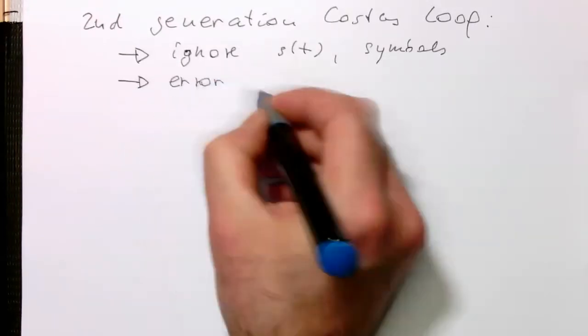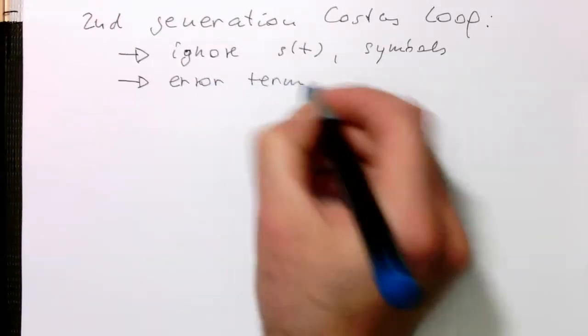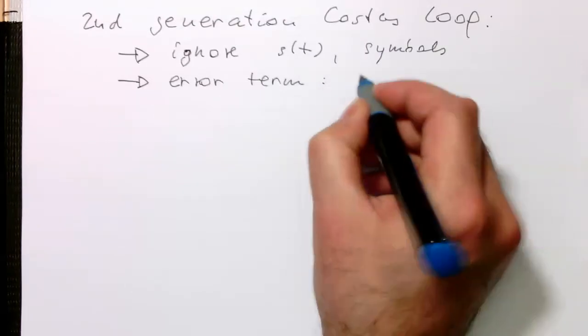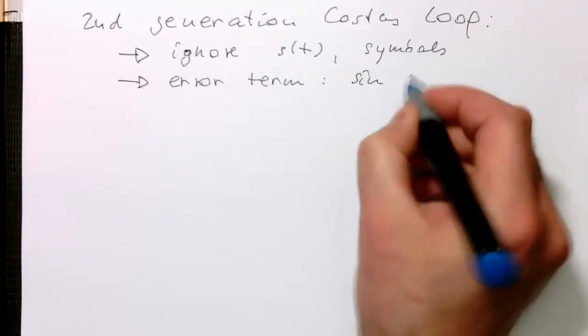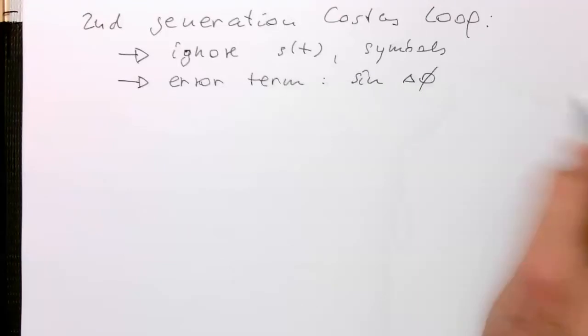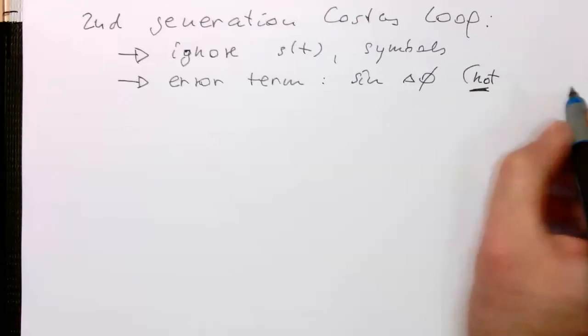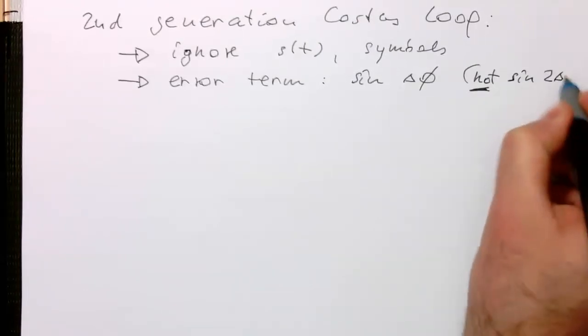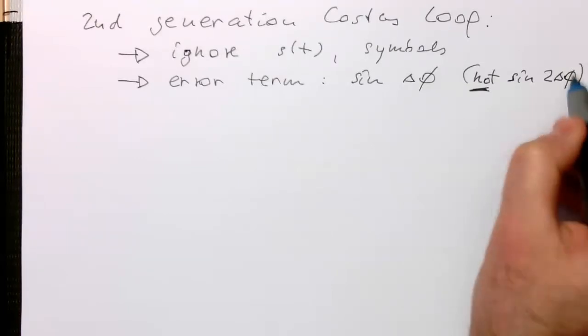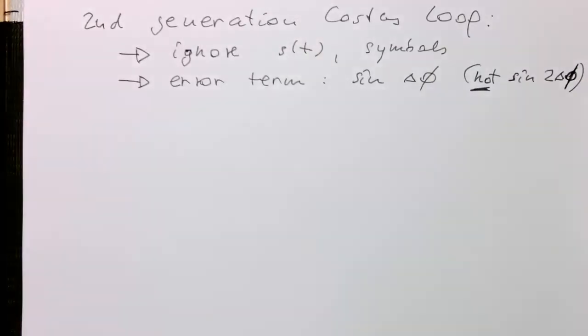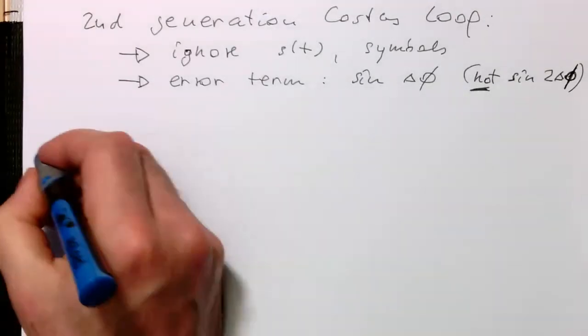And then our error term, the resulting of that should be sine of delta phi and not sine of 2 delta phi. Because as we know, this creates ambiguities and we don't want to have these ambiguities. So it's looking at zero phase and not also on 180 degree phase.